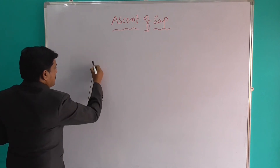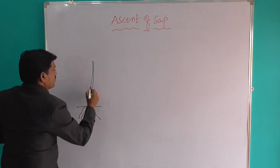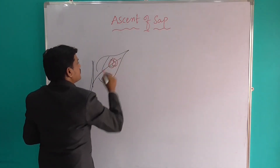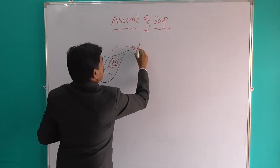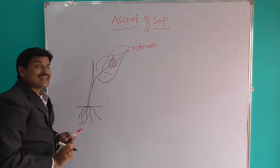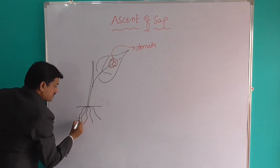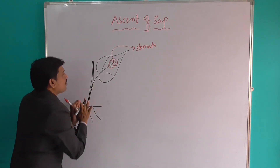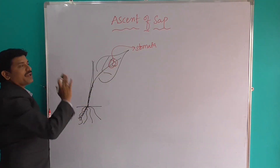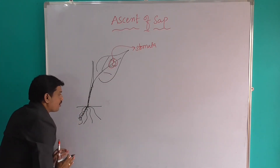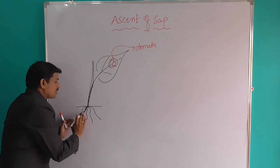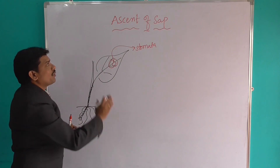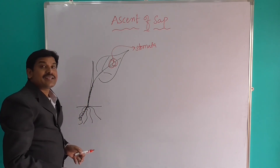Now the next concept: this is just like a root, this is a plant — I am drawing a diagram. This is a leaf, and the leaf has stomata. When the water vapor leaves through stomata, a thin film of water over the cells continuously results in pulling of water molecule by molecule from the xylem. That pulling of water from xylem leaf by leaf is called ascent of sap.